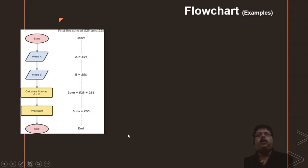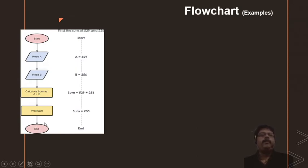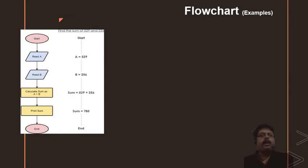Now let us discuss some examples of flowchart. We have already seen the algorithm for calculating the sum of two numbers. Here, ovals are defined for start and end. A parallelogram is used to read A and B — you can also write it as 'read A, B' in a single parallelogram. In the rectangular box, the sum is calculated. Note that there is one mistake in this diagram: there should be a parallelogram to print the sum as output.